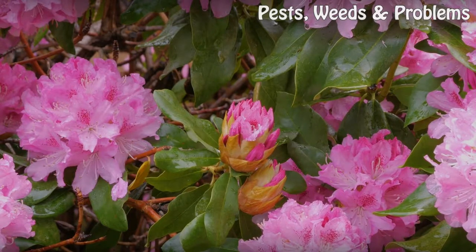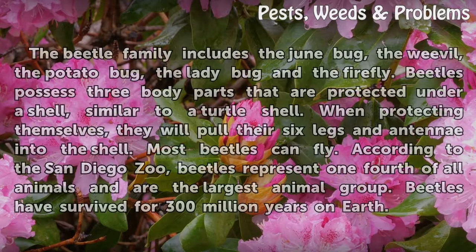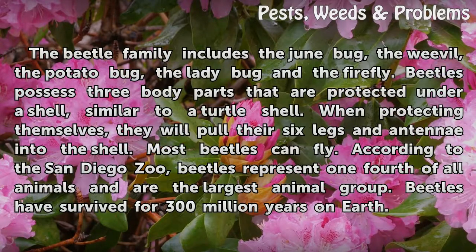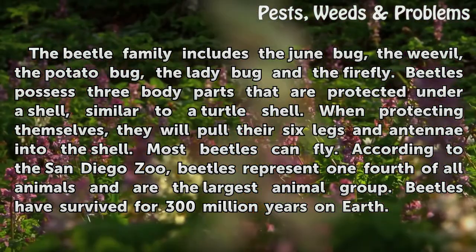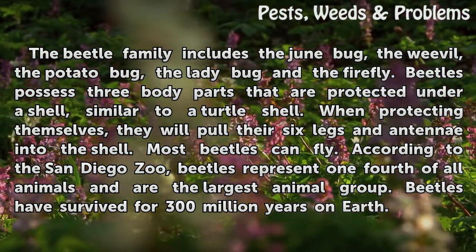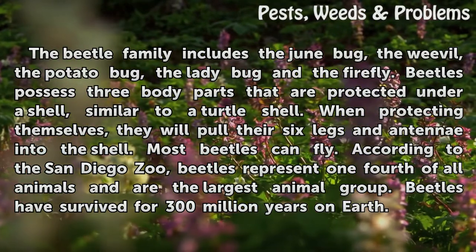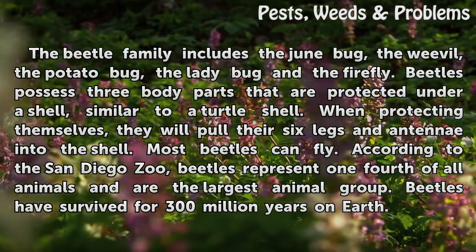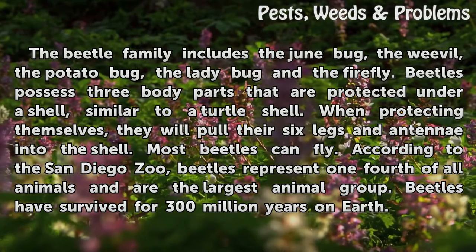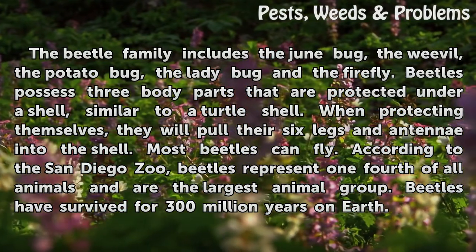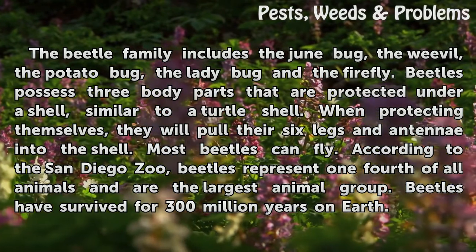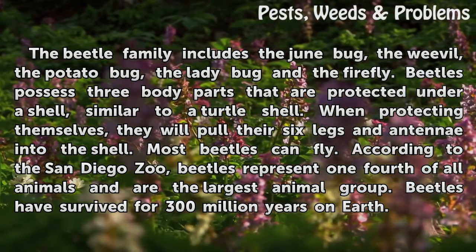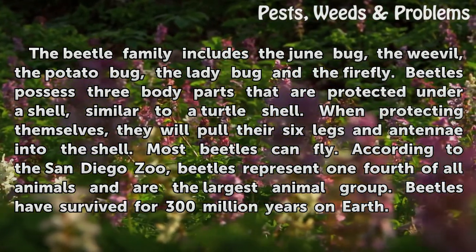Beetles. The beetle family includes the June bug, the weevil, the potato bug, the ladybug, and the firefly. Beetles possess three body parts that are protected under a shell, similar to a turtle shell. When protecting themselves, they will pull their six legs and antennae into the shell. Most beetles can fly. According to the San Diego Zoo, beetles represent one-fourth of all animals and are the largest animal group, having survived for 300 million years on Earth.